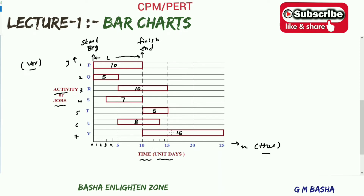Each and every bar represents the individual duration of its activity. For example, activity P takes 10 days total, and activity Q starts at time 0 and is completed within 5 days, so the overall length of that activity is 5 days. Based on this, we can draw some conclusions.